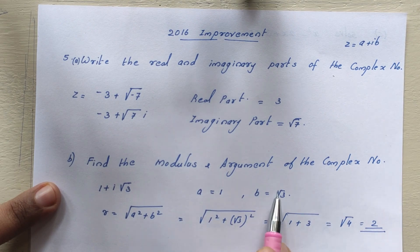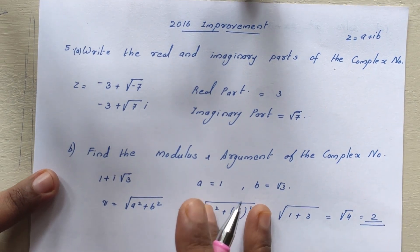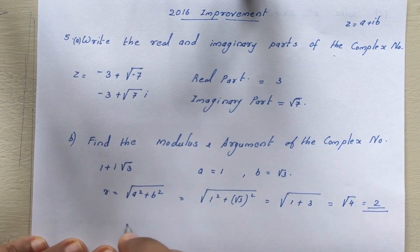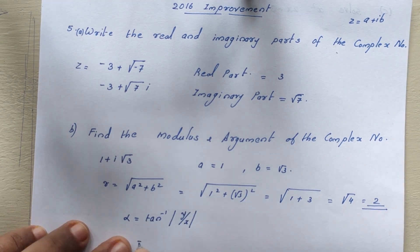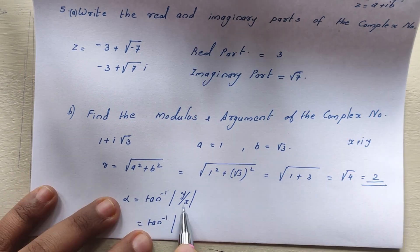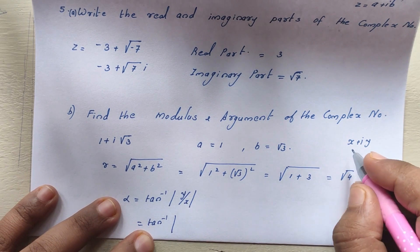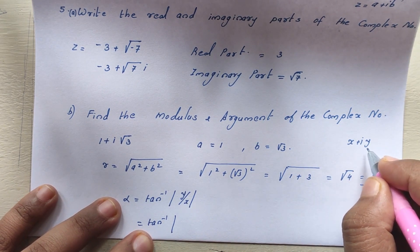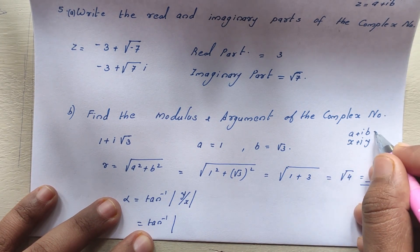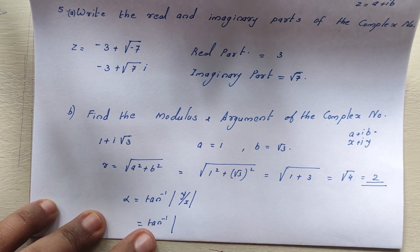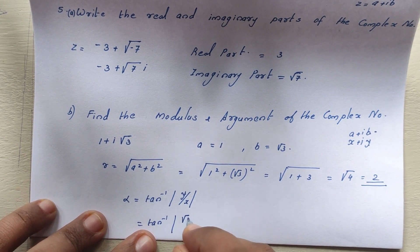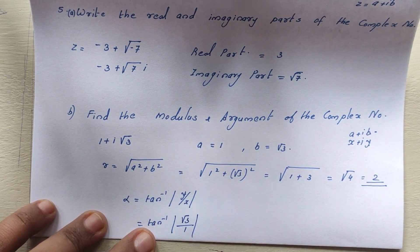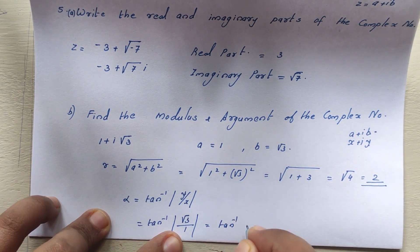Now find the argument. Argument theta equals alpha, where alpha equals tan inverse of modulus of y by x. The complex number is x plus iy, written as a plus ib, where y is the imaginary part and x is the real part. So alpha equals tan inverse of root 3 divided by 1, which equals tan inverse of root 3.